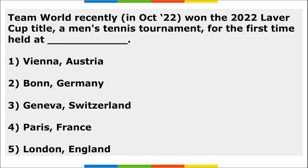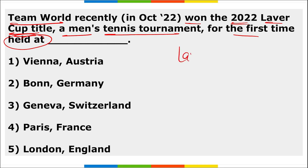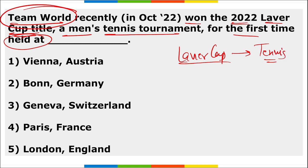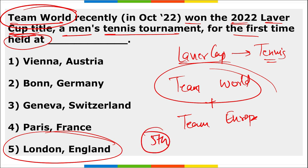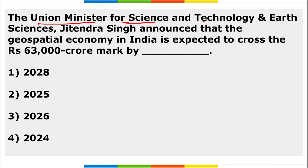R. Praggnanandhaa defeated World Chess Champion Magnus Carlsen in the FTX Crypto Cup. Cryptocurrency works on blockchain technology. Team World won the 2022 Laver Cup men's tennis tournament for the first time, held in London, England. This was the fifth edition of the Laver Cup, contested between Team World and Team Europe.